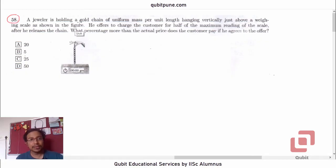Let's read the statement. A jeweller is holding a gold chain of uniform mass per unit length hanging vertically just above a weighing scale as shown in the figure. He offers to charge the customer for half of the maximum reading of the scale after he releases the chain. What percentage more than the actual price does the customer pay if he agrees to the offer? 20%, 5%, 25%, or 50%.